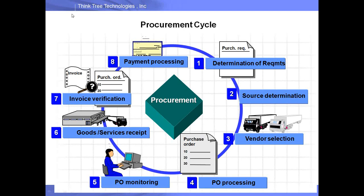In summary, the typical procurement cycle has eight steps: determine requirement, find the source, select the right vendor, create a purchase order, monitor the purchase orders, receive the goods from the vendor, do goods receipt in the system, verify the invoice, and process the payment.